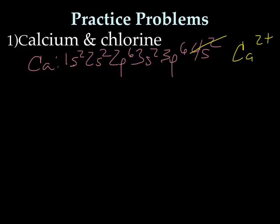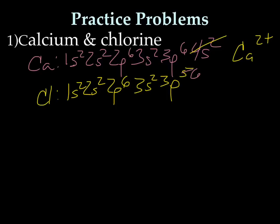Then we've got chlorine. Chlorine is 1s2, 2s2, 2p6, 3s2, 3p5. He's a non-metal, so he's going to gain one to become 3s2, 3p6. So he's going to be Cl1-.